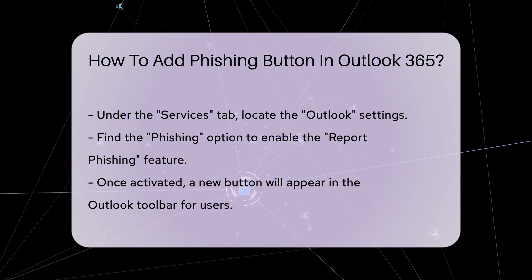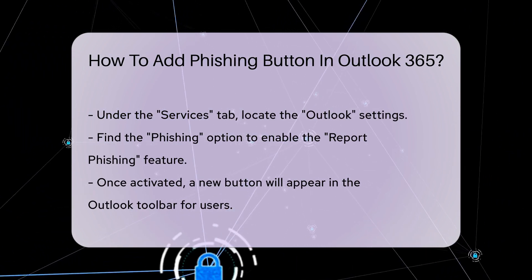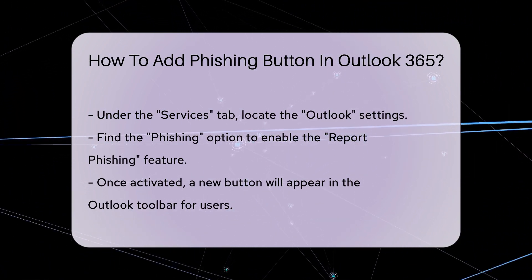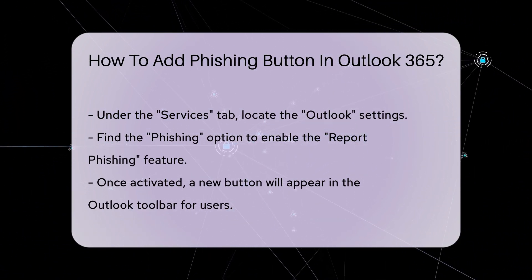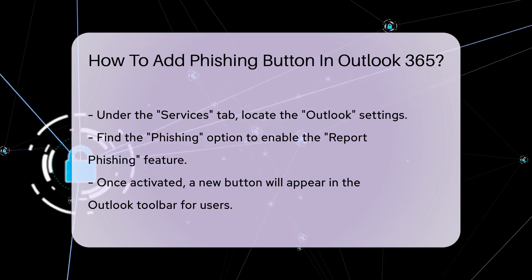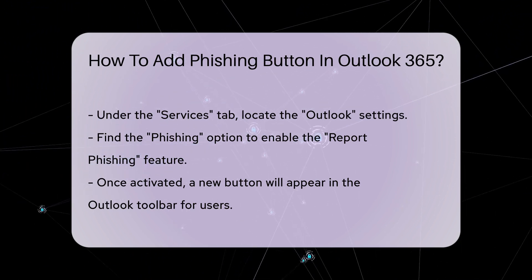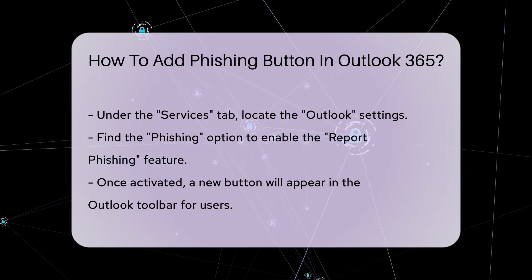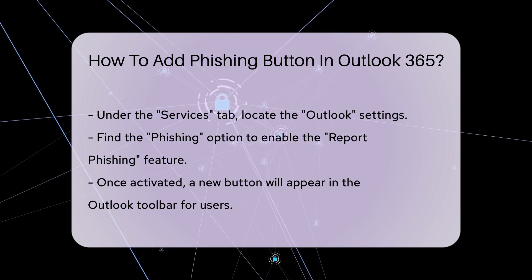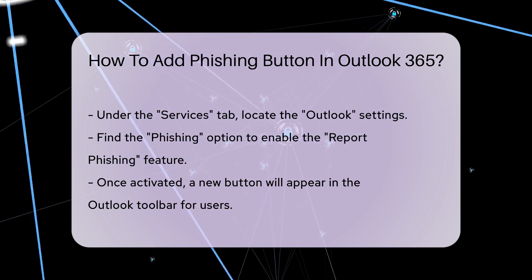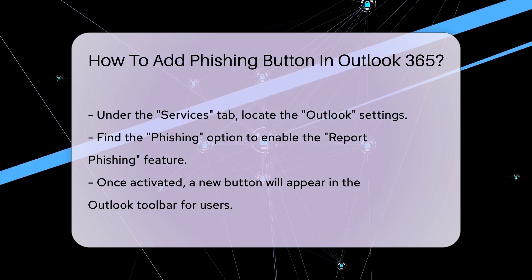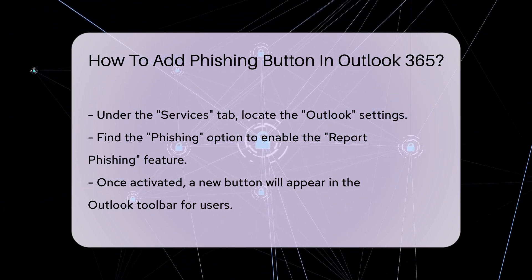Once activated, users will see a new button in their Outlook toolbar. This button enables them to report suspicious emails directly to their security team. It's essential to communicate to users how to utilize this feature effectively.